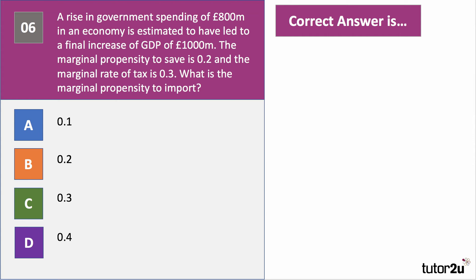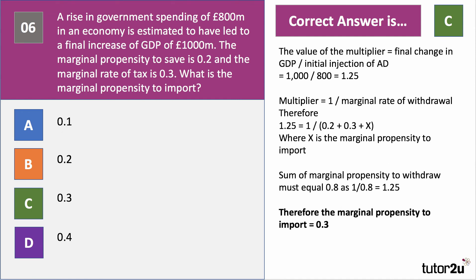This is quite a hard question on the multiplier. The correct answer to question six is C — 0.3. The value of the multiplier is the final change in GDP divided by the initial injection of aggregate demand. The final change in national income is £1,000 million, caused by the multiplier times the £800 million injection. Therefore, the multiplier is 1.25. That equals 1 over the marginal rate of withdrawal from the circular flow. We know the marginal propensity to save is 0.2 and the marginal rate of tax is 0.3, so the total rate of withdrawal must be 0.8 to give a multiplier of 1.25. Therefore, the marginal propensity to import must be 0.3.